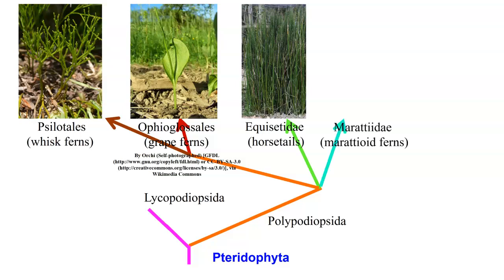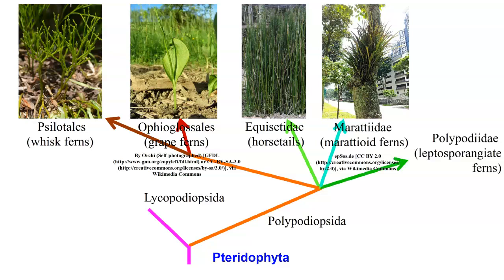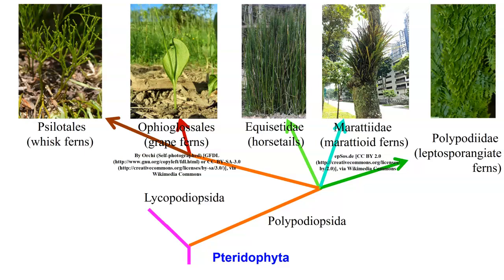We have the marattiidae, the marattioid ferns. You find some of these in tropical areas, and they look more like a typical fern, which means they are a seedless vascular plant. Then we have the polypodiae, which are the leptosporangiate ferns, and we're starting to look at a more advanced type of plant material.